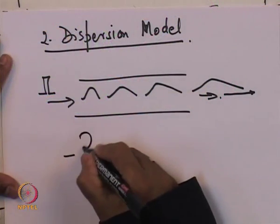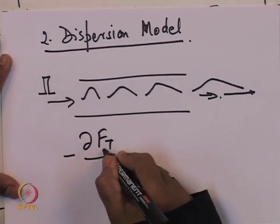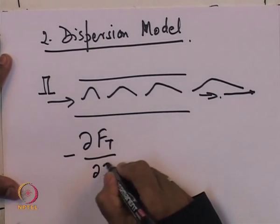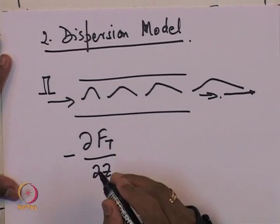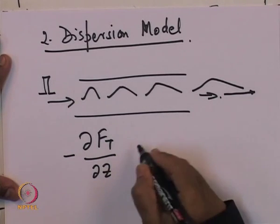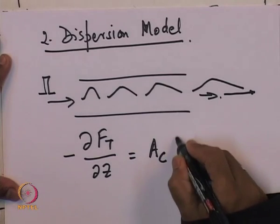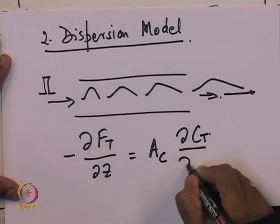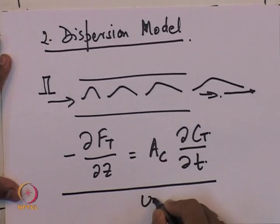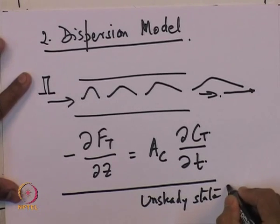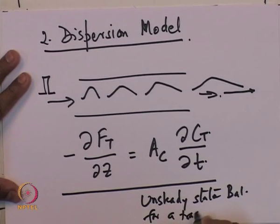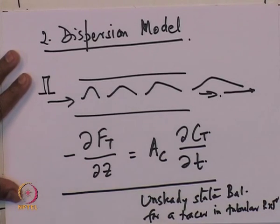For unsteady state, if I inject a tracer, I have to write an unsteady-state balance. For a PFR the steady-state balance is dF_A/dV = r. Now I have a tracer injected — the reaction term R is zero under non-reactive conditions. So you have flow taking place, but at the same time the tracer concentration at any given point is going to change with respect to time. The unsteady-state equation for a PFR is: dF_T/dz equals A_c times dC_T/dt.